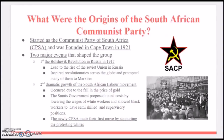The second thing that really shaped the group was the dramatic growth of the South African labor movement. This occurred due to the fall in the price of gold. Smuts's government proposed to cut costs by lowering the wages of white workers, and allowed black workers to have semi-skilled and supervisory positions. He was the Prime Minister of South Africa at the time. The newly formed CPSA made their first move by supporting the protesting whites.